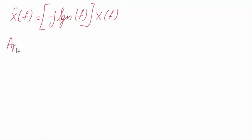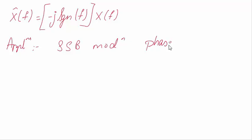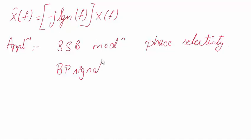The applications of Hilbert transform: it is used in generation of SSB modulation to realize phase selectivity. Whenever you want phase selectivity, you are going to make use of the Hilbert transform pair. The next application is it provides a mathematical basis for the representation of band pass signals. So if you want a mathematical representation of a band pass signal, you make use of Hilbert transform.